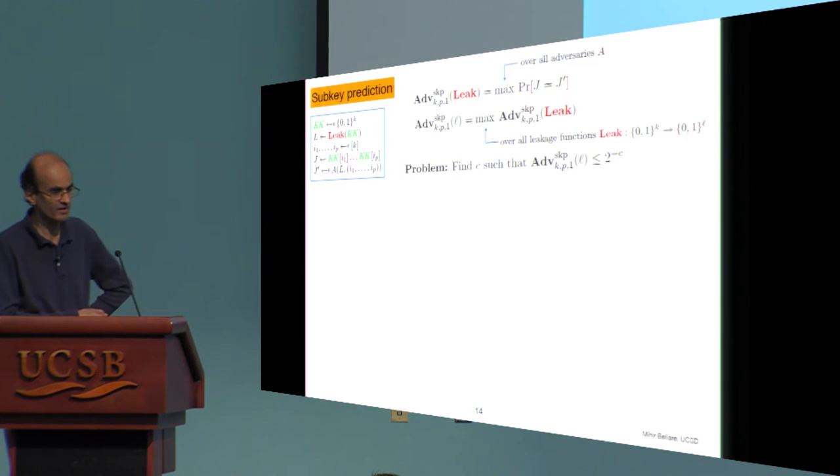The lemma itself is not about encryption. There's no crypto or random oracles anywhere in it. It just considers this simple information-theoretic problem, which is that you pick a large key. Well, at this point, the length is a parameter, some key at random, and then apply some leakage function to it to get L.